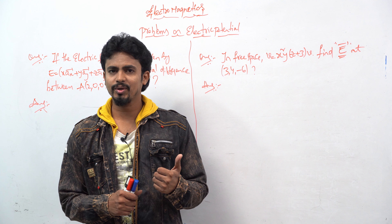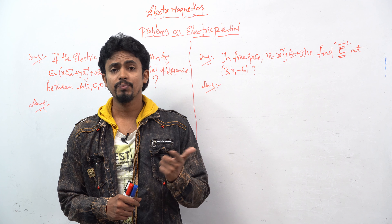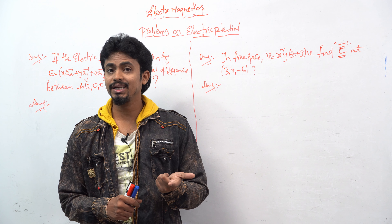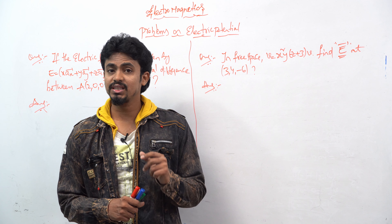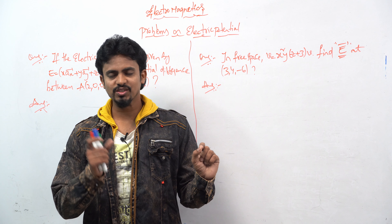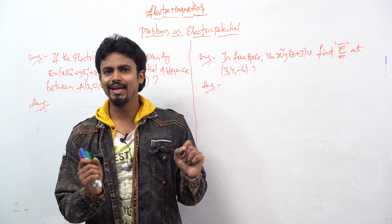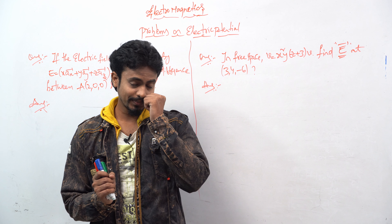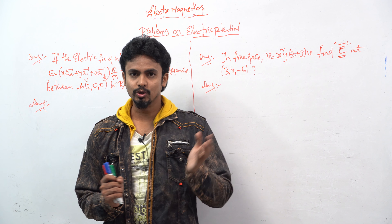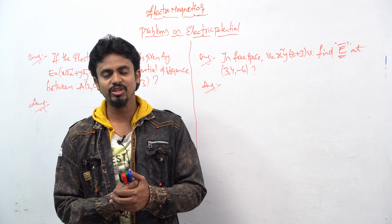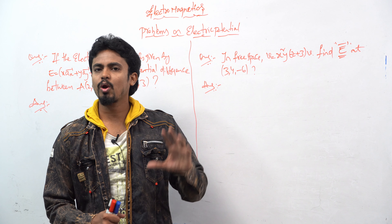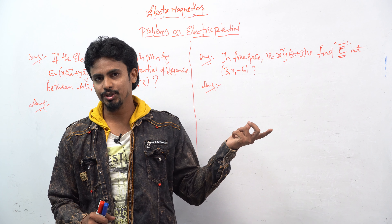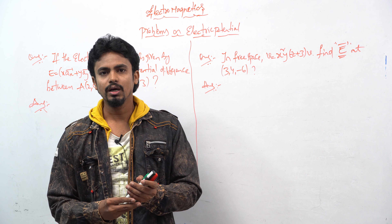We will see the concept of electric potential and what will be the electric potential due to the gradient, as well as Poisson's equation and Laplace's equation. We will also see some simple questions based on that. Now let us see the important concept — problems based on the electric potential. This concept will be very very important.